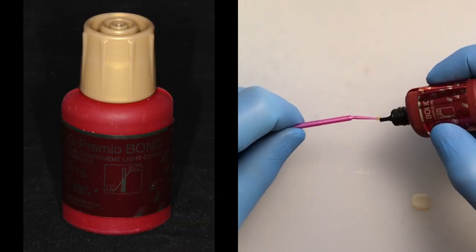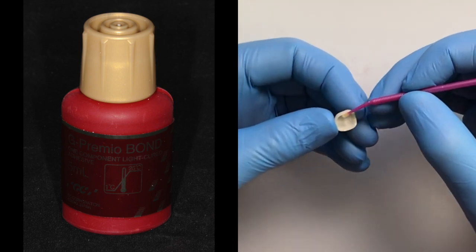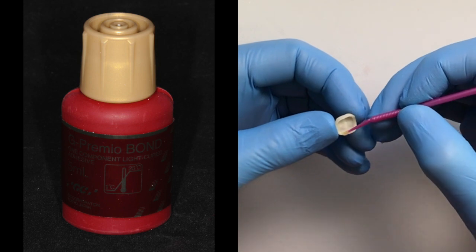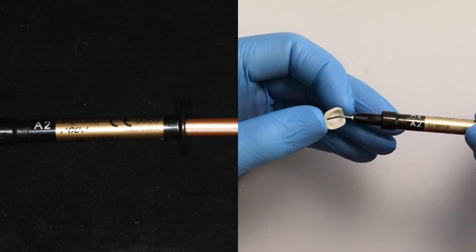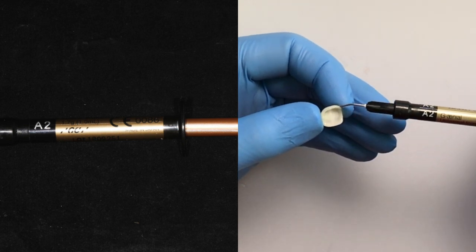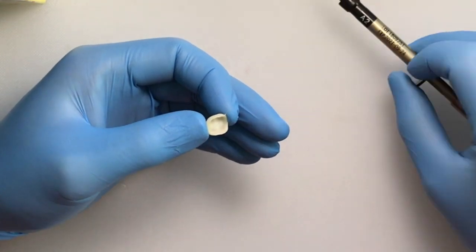In this case, you remove it using the Premio bond. We add a little bonding agent to the margin. Just enough. Actually, I add a little bit around the facial and lingual as well, and then carefully add a flowable composite. This is Genial from GC America as well.